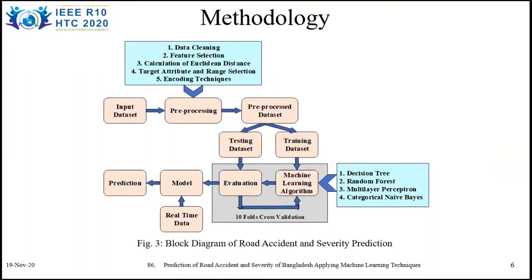Several machine learning algorithms were used in our system. They are decision tree, random forest, multilayer perceptron, and categorical Naive Bayes. After the whole process, our model was prepared to predict and give results based on real-time data. I am going to clarify all these sections one by one.